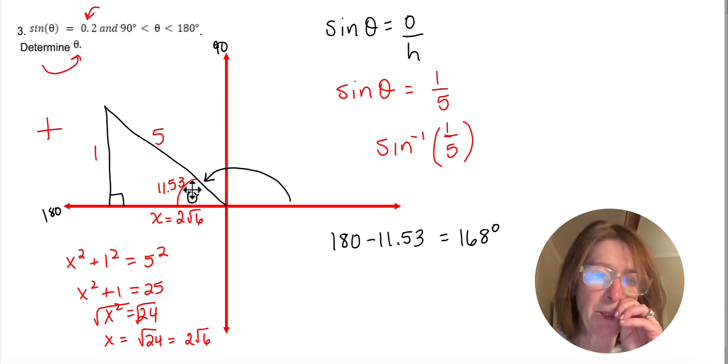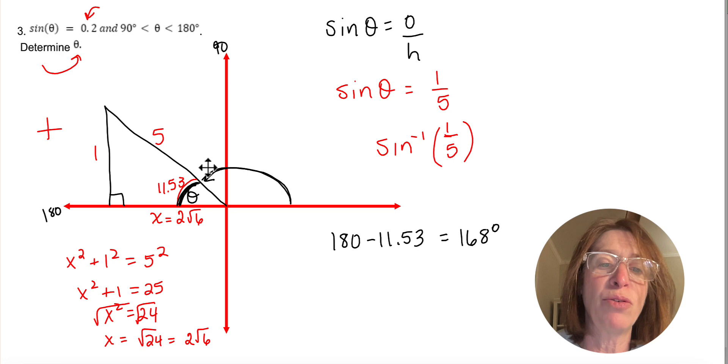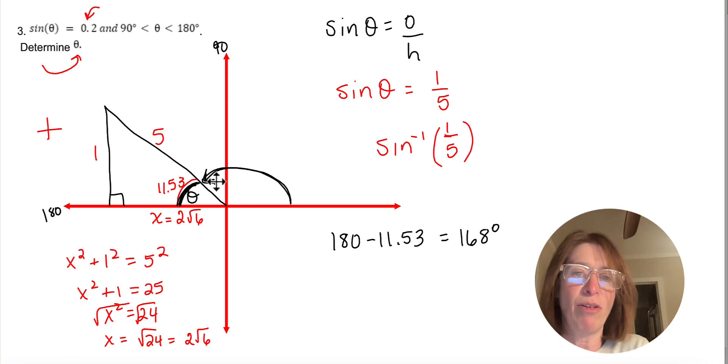Because remember, this is the reference, this is like the reference angle that we're using. When we're talking about where the triangle's terminal side lies, you start in standard position and you go towards the hypotenuse of the triangle.